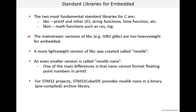The mainstream versions of libc — for example, the GNU version — are considered to be too heavyweight for embedded. They were designed for operating systems like Linux and Windows that have lots of memory. So a lighter weight version of libc was created called NewLib.